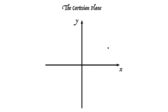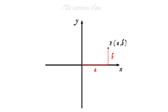Where is that point? Well we start at the origin, let's travel a parallel to the x axis, let's travel b parallel to the y axis. That gives us our familiar a and b, x and y coordinates.